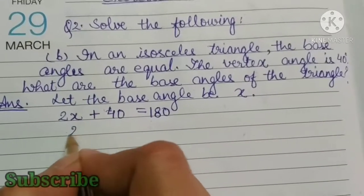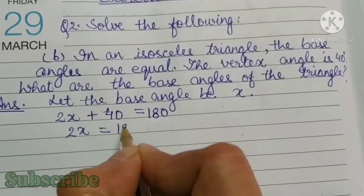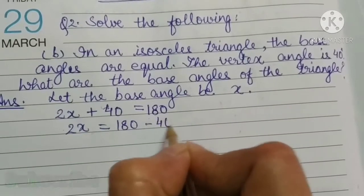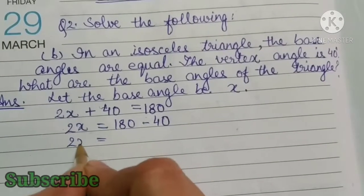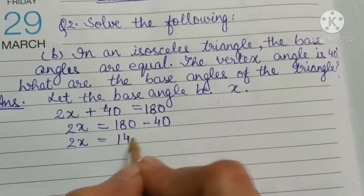Now, we will transpose 40. So, 2x is equal to 180 minus 40. We get 2x is equal to 140.